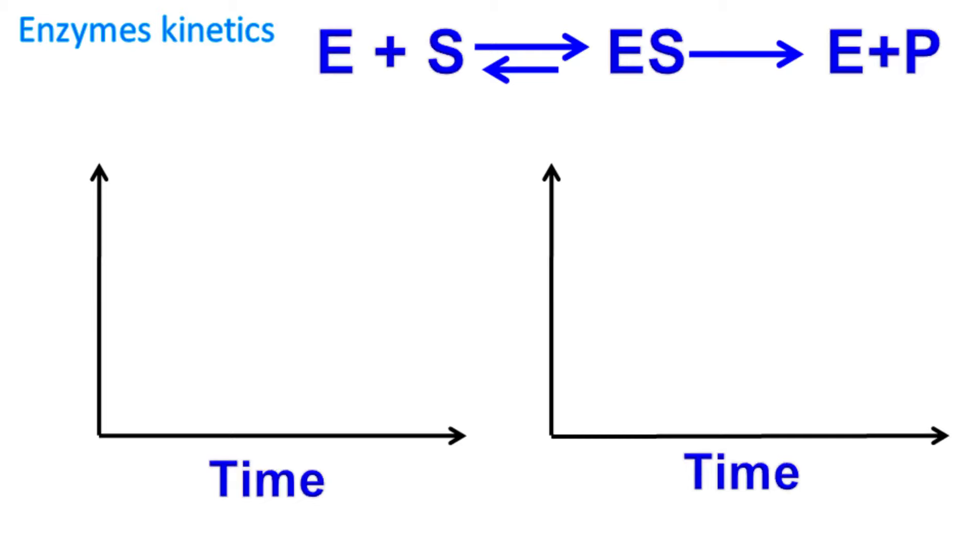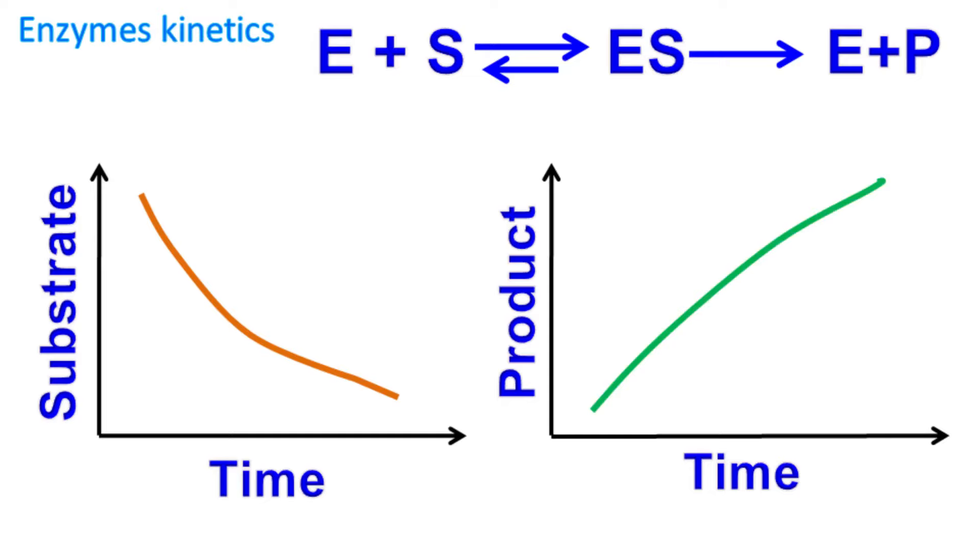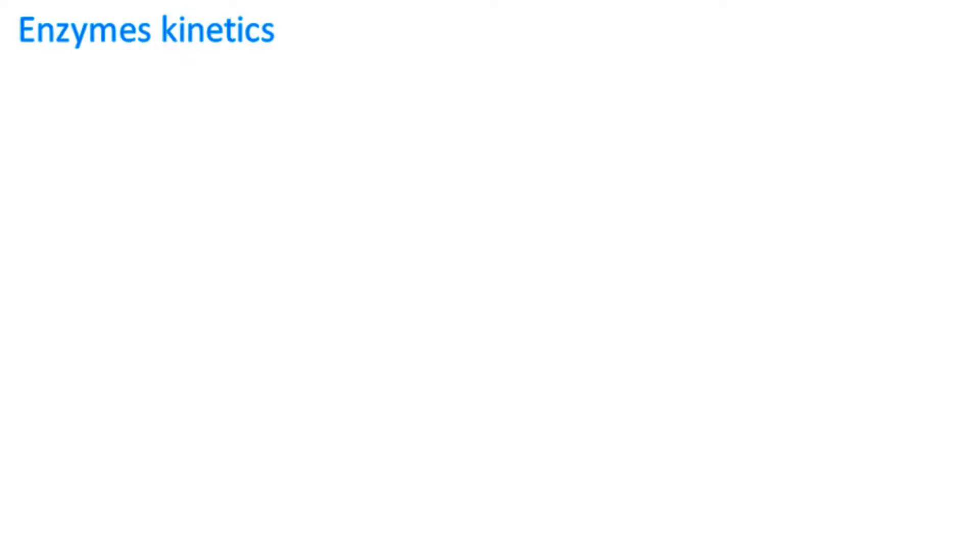We can plot this phenomenon simply as concentration of substrate or products versus time. As the substrate is consumed, the concentration of substrate decreases over time and as the product formation continues, the concentration of products increases over time.